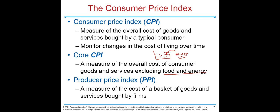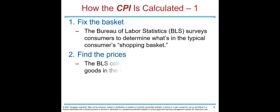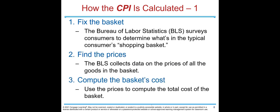The Producer Price Index, or PPI, is a measure of the cost of a basket of goods and services bought by firms. The key difference between PPI and CPI is who buys the basket: for CPI it's consumers; for PPI it's producers.